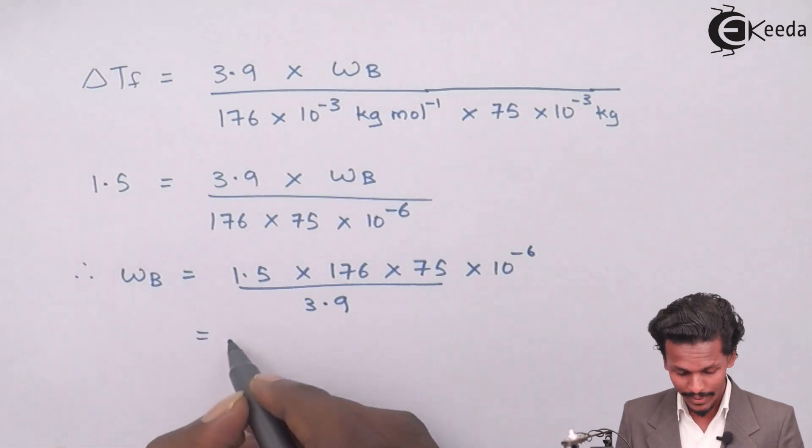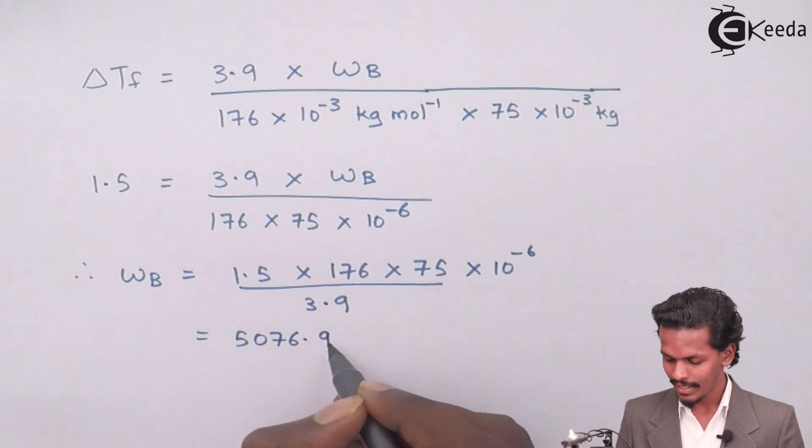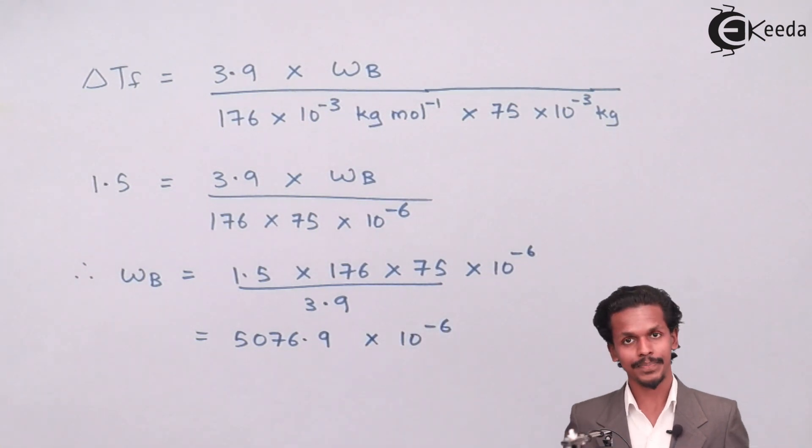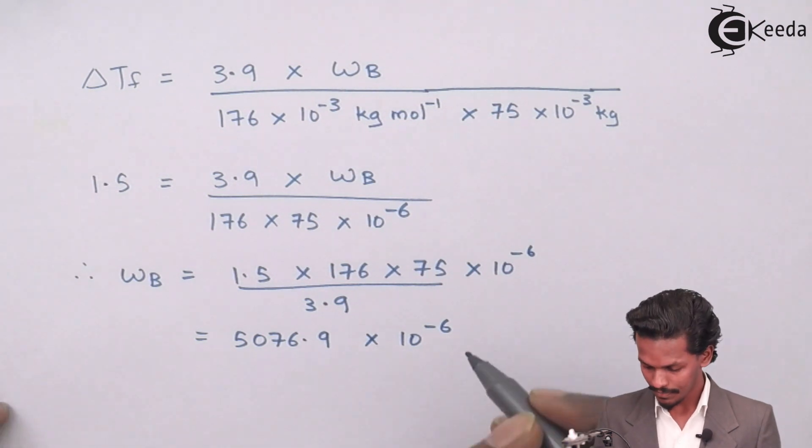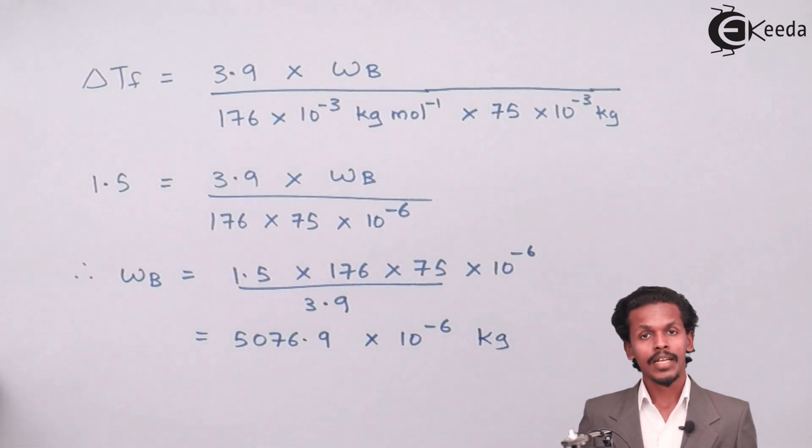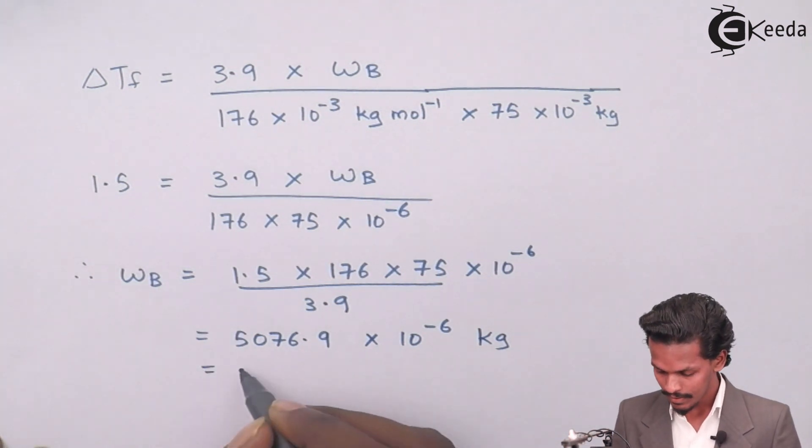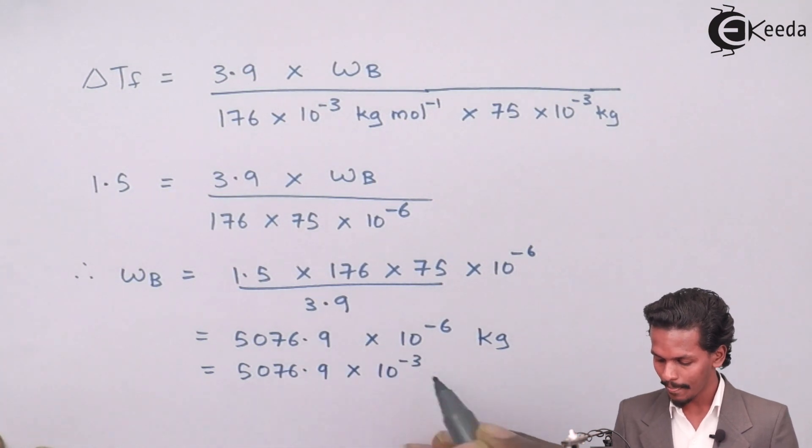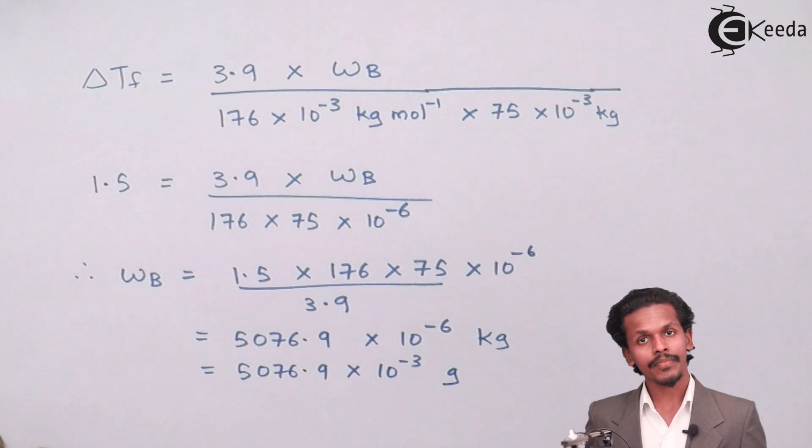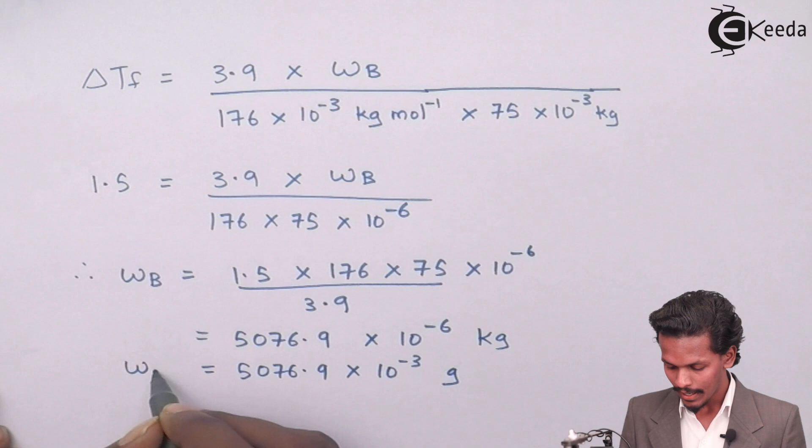The WB will be 5076.9 into 10 raised to minus 6, but this would be in kg. To convert into gram, it will be 5076.9 into 10 raised to minus 3 gram.